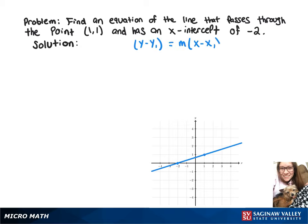To find our slope, we can use the x-intercept as another point. So we'll do 0 minus 1 over negative 2 minus 1. And that gives us negative 1 over negative 3, or just 1 over 3. Now we can sub our point into our point slope form and get y minus